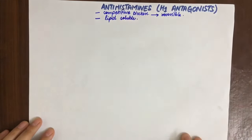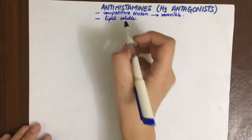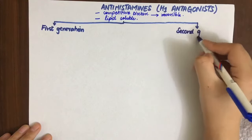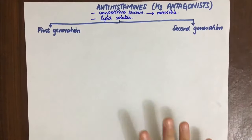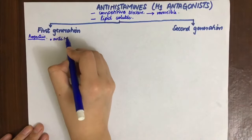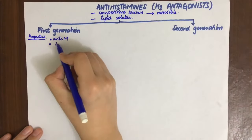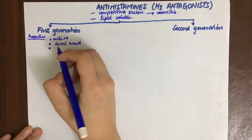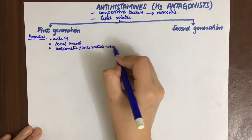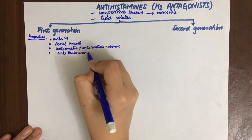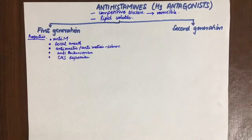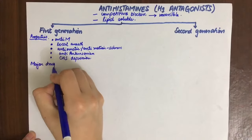Antihistaminic drugs are classified into first-generation and second-generation drugs. First-generation drugs have several special properties: they are antimuscarinic, causing urinary retention and constipation; they act as local anesthetics due to sodium channel blockade; they are antiemetic and anti-motion sickness by blocking muscarinic and H1 receptors in the vestibular apparatus and vomiting center; they are anti-Parkinsonian; and they cause CNS depression due to H1 blockade.